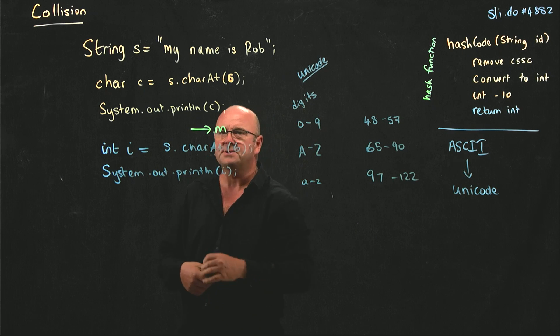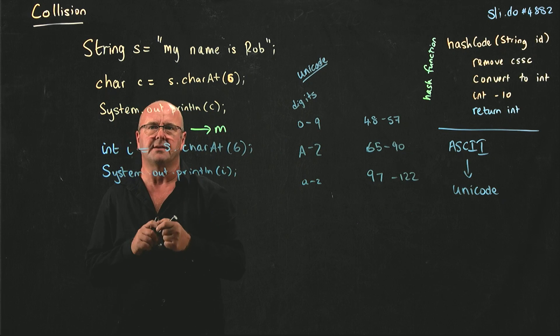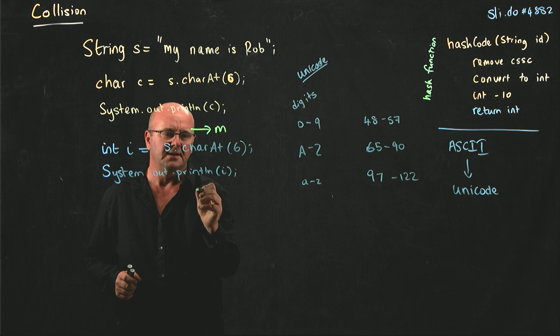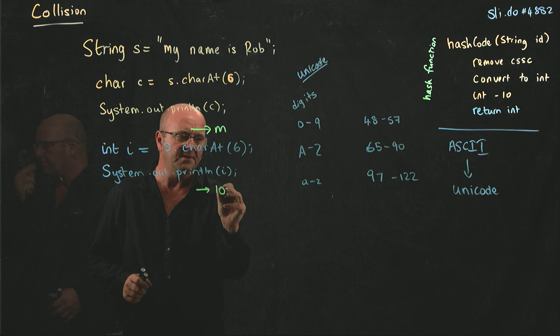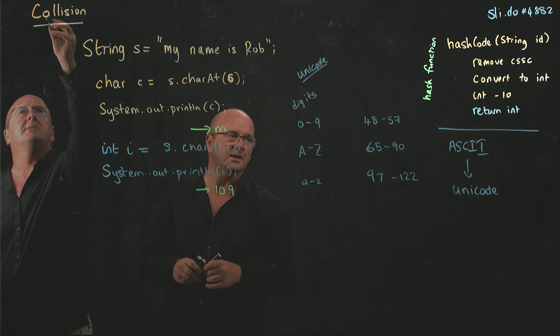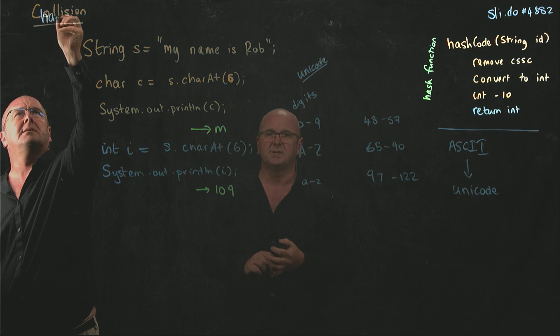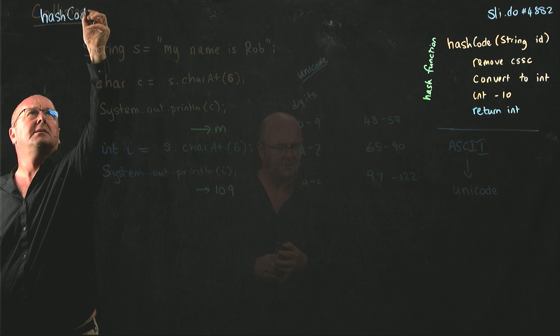So in fact, when you ask it to print out the character at position 6 as an integer, Java will print out 109, which is the representation of an 'M' in Unicode.